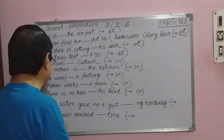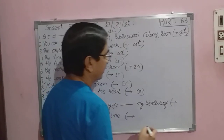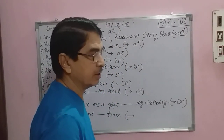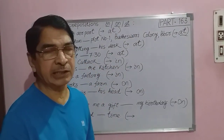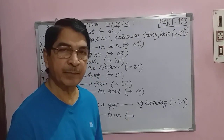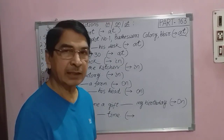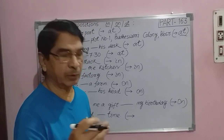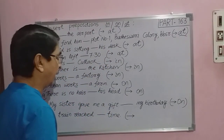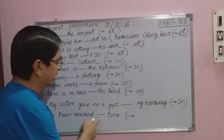Question number ten: My sister gave me a gift ___ my birthday. The answer is ON. We use ON for a specific day or date. ON my birthday, ON the day — these are expressions where ON is used with days and dates.